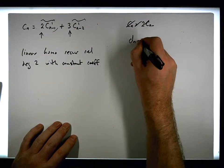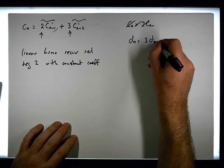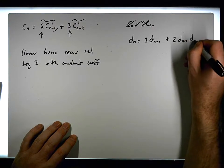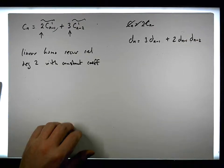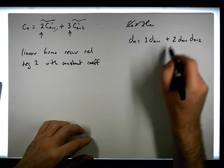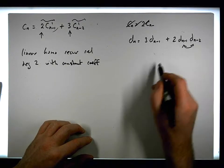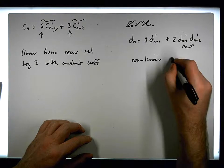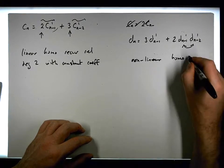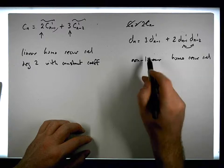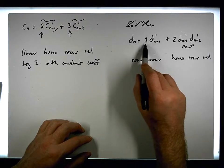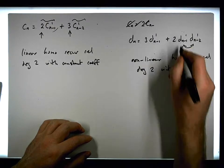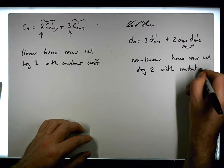Now let's look at d(n) = 3·d(n-1) + 2·d(n-1)·d(n-2). This is nonlinear because we have the product of two terms. It is homogeneous because each term is raised to the same power, and it's of degree 2 since we go back two terms. It has constant coefficients.